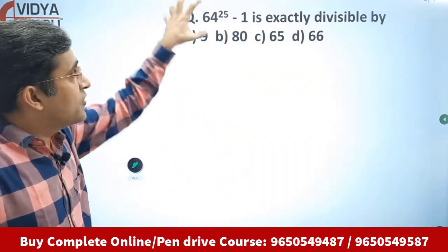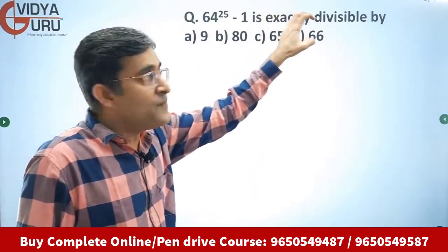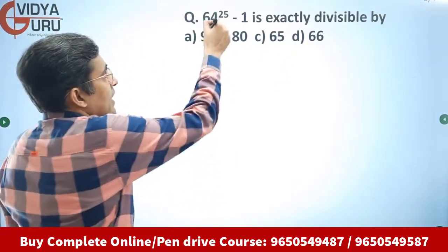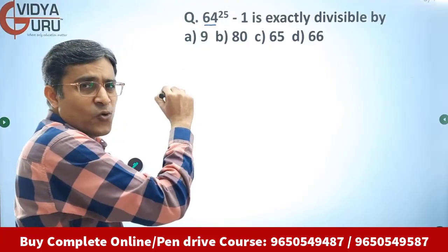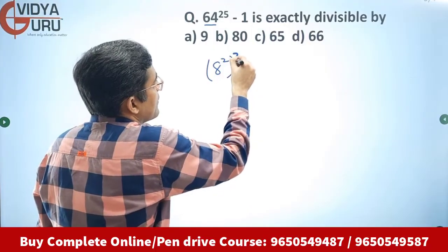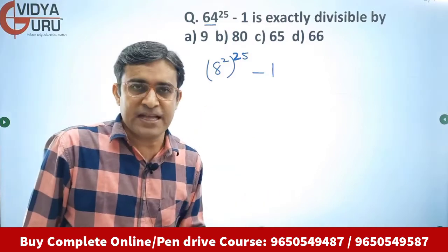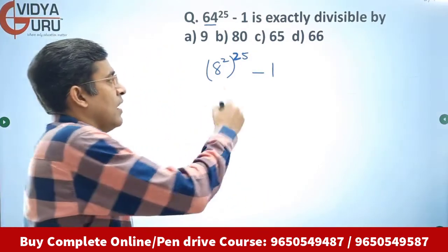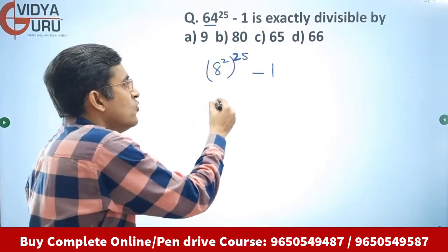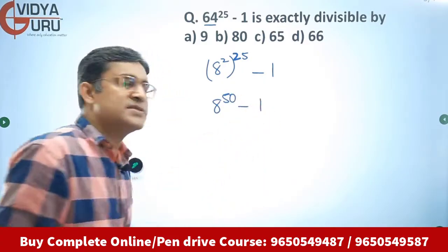Now let's read the next question: 64 raised to power 25 minus 1 is exactly divisible by which of the following? Look at 64 — can I write 64 as 8 squared? Of course. So I write 8 squared raised to power 25 minus 1. Multiplying the powers, 25 into 2 gives a power of 50, so this becomes 8 raised to power 50 minus 1.